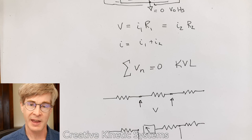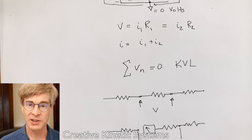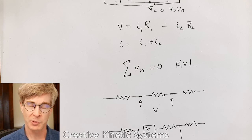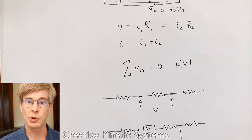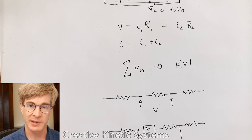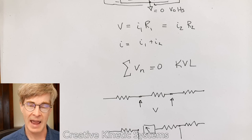Kirchhoff's voltage law, KVL, is a statement essentially of the relative nature of voltage measurement. It allows us to look at loops within our circuit and reason that the sum of voltages around those loops has to be zero. And that's a fact that we can use to analyze other circuits.